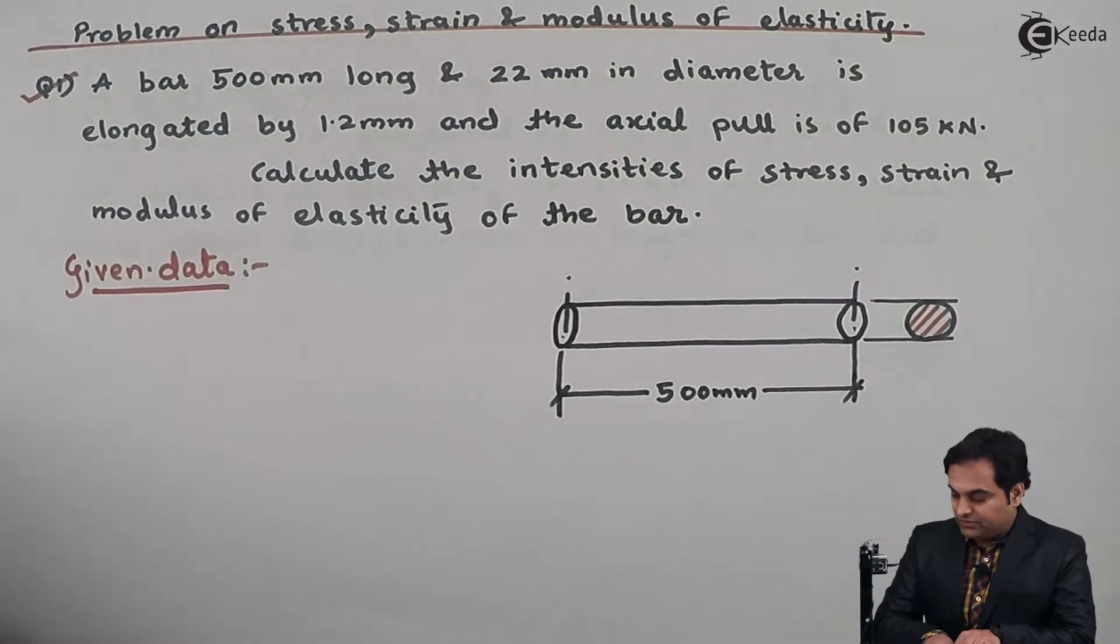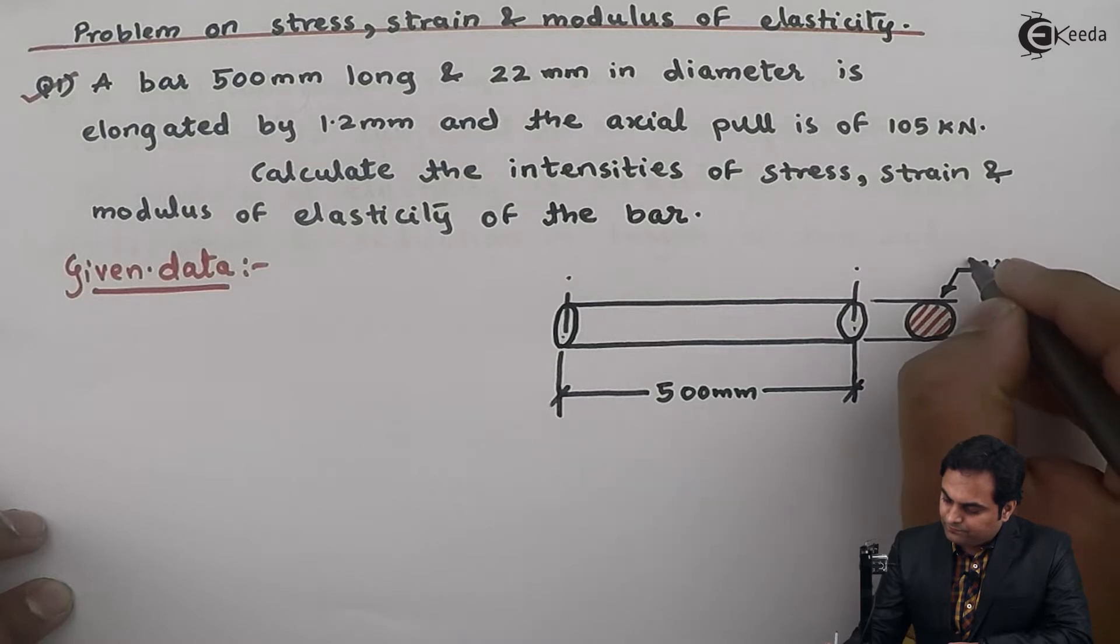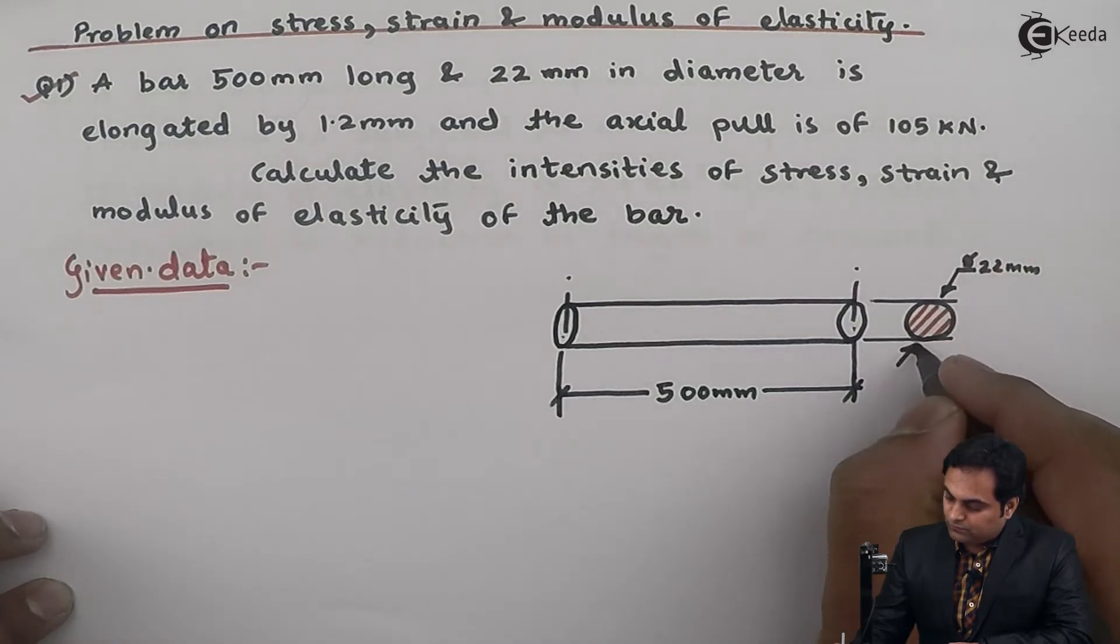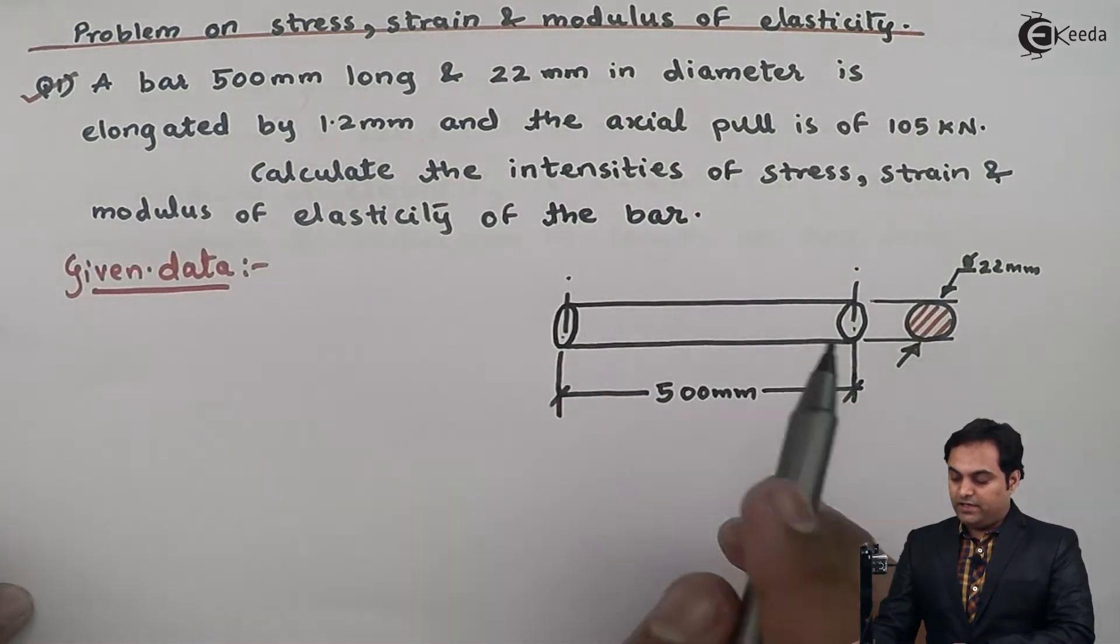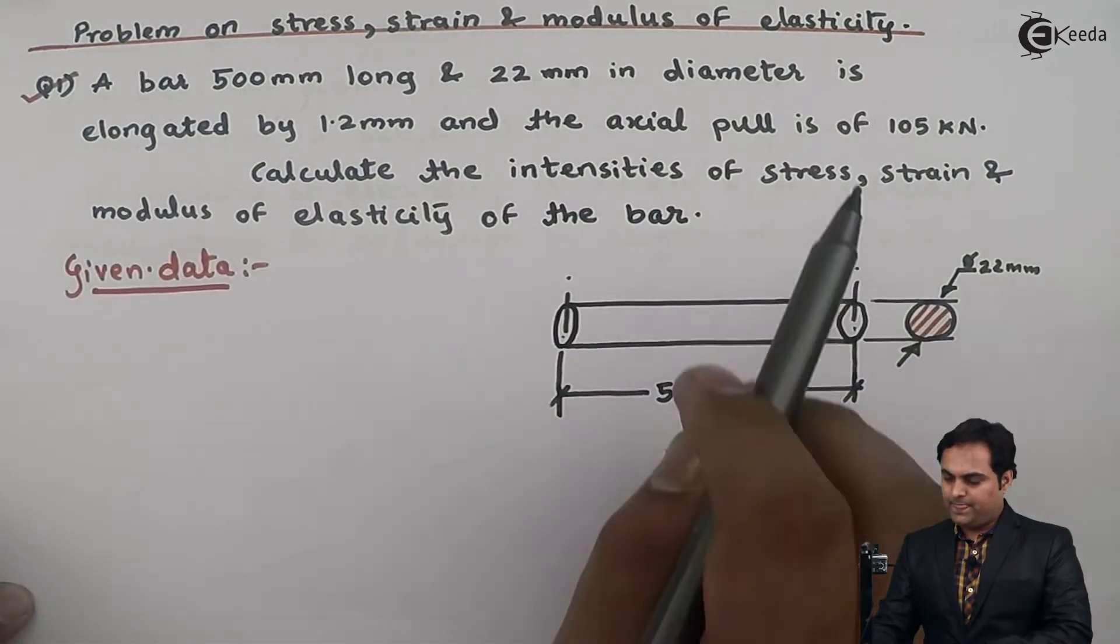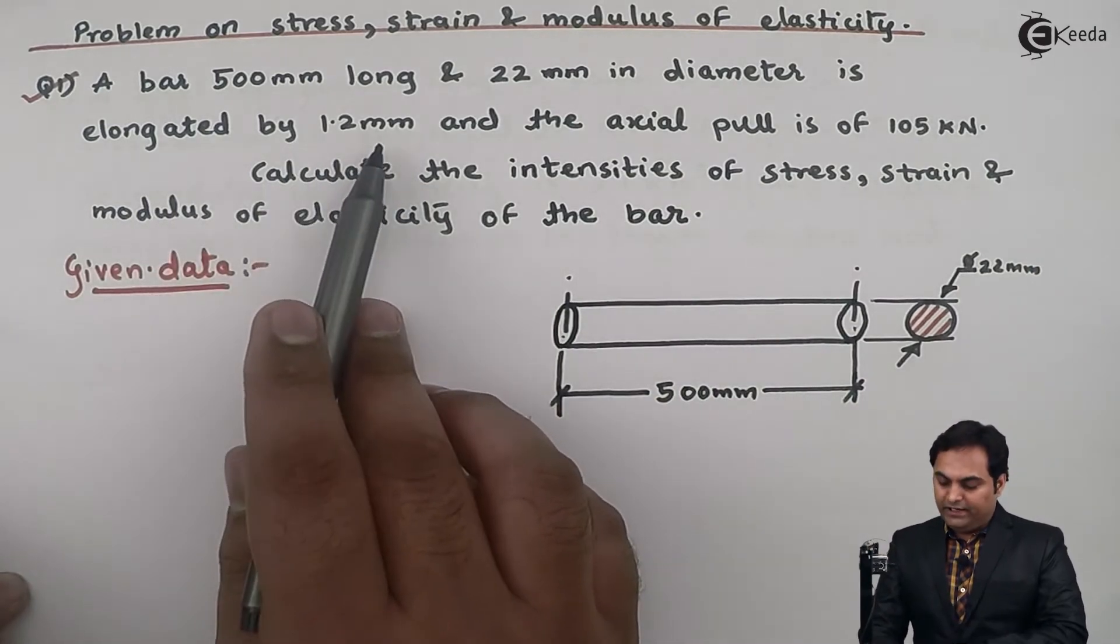So the bar having length and diameter is elongated by 1.2 mm. This elongation means that here on this bar there would be a pull type of load, that is why there is elongation.